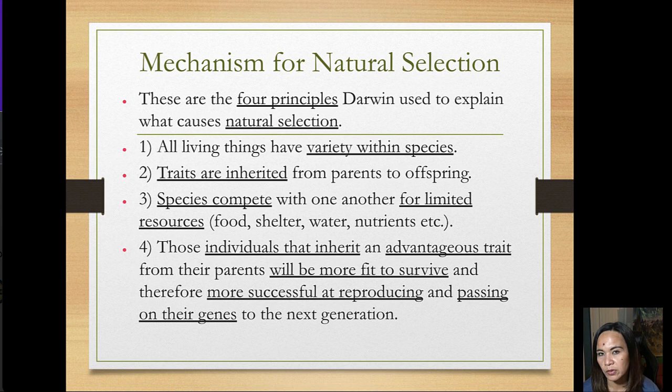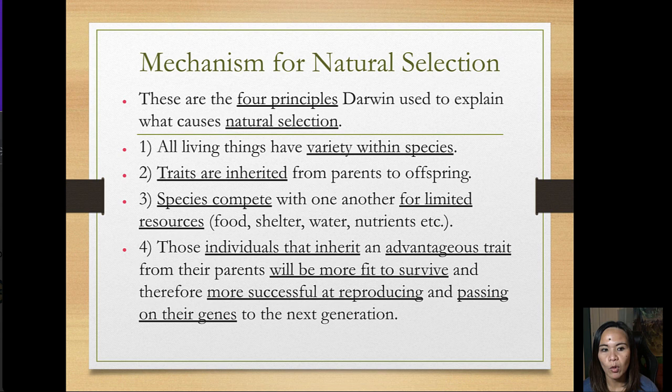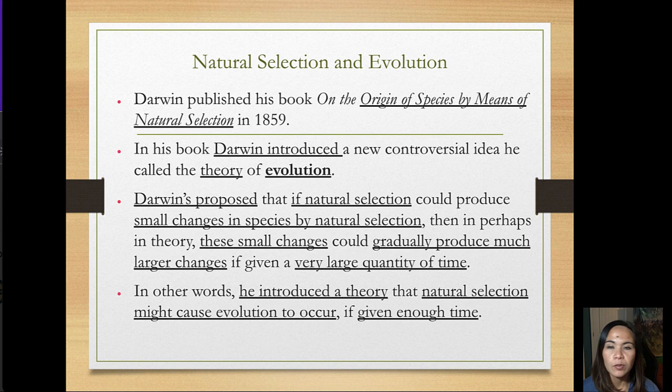These are the four principles Darwin used to explain what causes natural selection: first, all living things have variety within species; second, traits are inherited from parents to offspring; third, species compete with one another for limited resources like food, shelter, water, and nutrients; and fourth, individuals that inherit an advantageous trait will be more fit to survive and more successful in reproducing and passing on their genes.